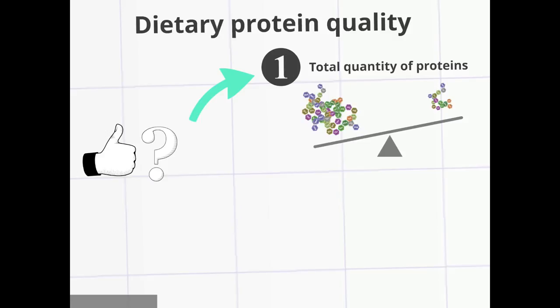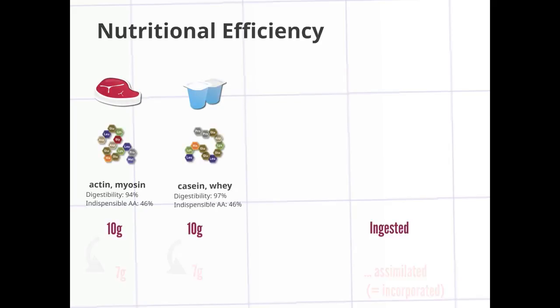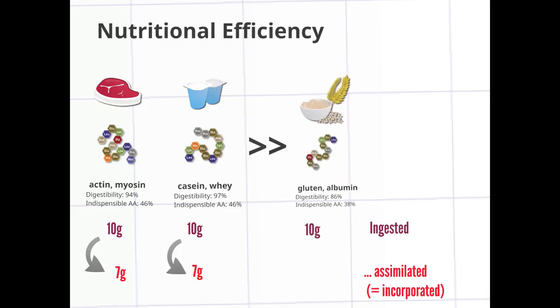The second element is the efficiency with which the protein and amino acids of the protein are assimilated and used by the organism. There are proteins that are very well assimilated by the organism. For example, meat and milk protein. And there are other proteins that are a bit less well assimilated, such as cereal protein.